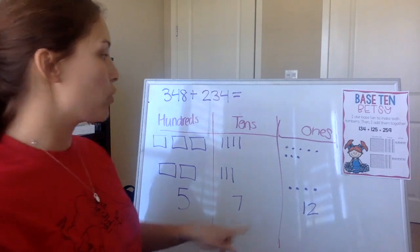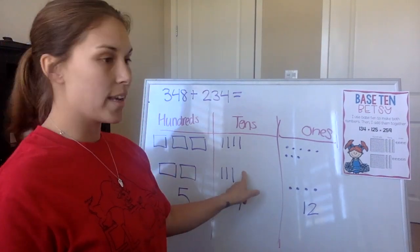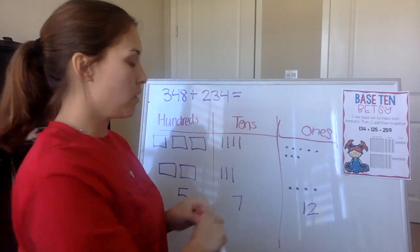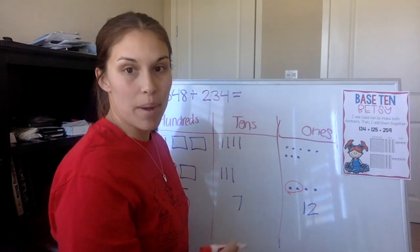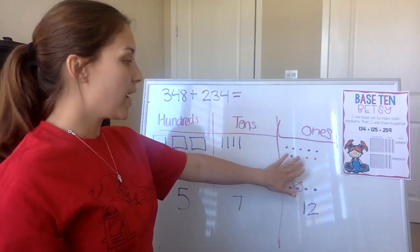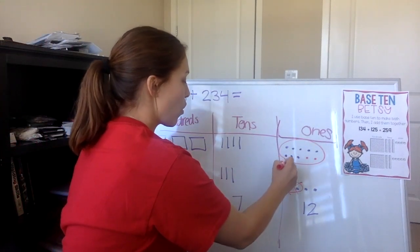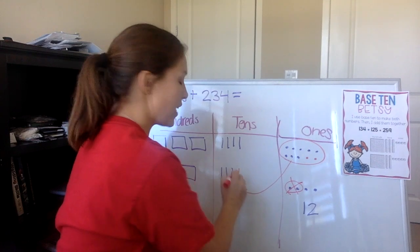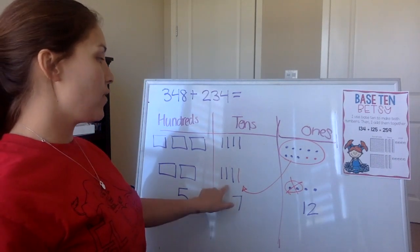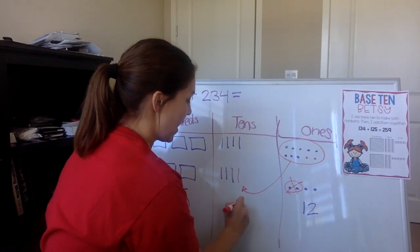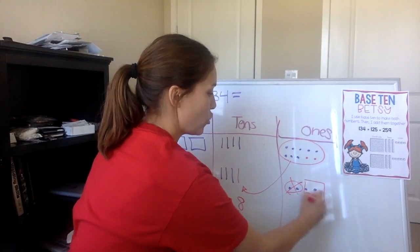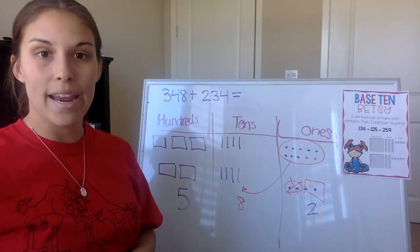Regrouping means we need to regroup ten ones and trade them for one ten. I'm going to use a different color marker. We have eight ones up here, so I'm going to take two of these to make ten. Now that I have ten ones, I can trade them for one ten. So I'm going to add this extra ten over here. This now leaves us with five hundreds. Instead of seven tens, this leaves us with eight tens. And instead of twelve ones, since we regrouped, this leaves us with just two ones left over. So our answer is 582.